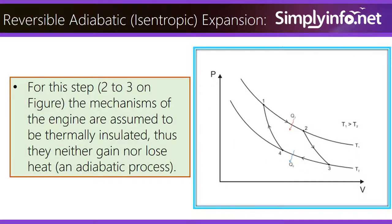Reversible Adiabatic Isentropic Expansion: For step 2 to 3 on the figure, the mechanisms of the engine are assumed to be thermally insulated. Thus they neither gain nor lose heat, an adiabatic process.